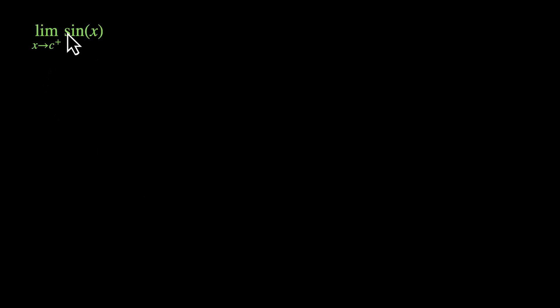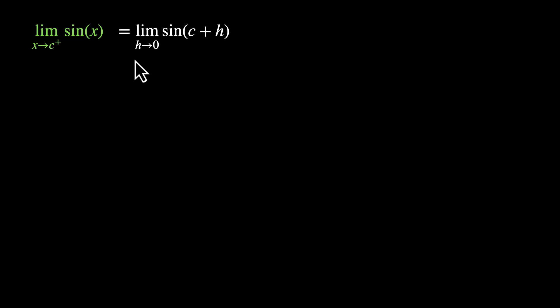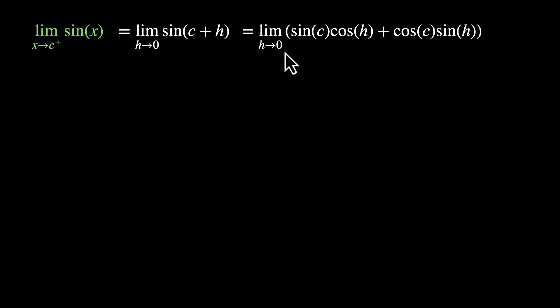So how do we prove this? Let's figure out the left-hand and right-hand limit. Starting with the right-hand limit: limit as x approaches c⁺ of sin(x). We can write this as limit as h approaches 0 (h is a very small positive quantity) of sin(c + h), which expands using sin(a + b) as sin(c)cos(h) + cos(c)sin(h).